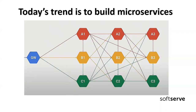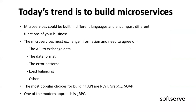These microservices need to agree on many things about how to communicate with each other. Microservices could be built in different languages and encompass different business functions, and they need to agree on a lot of things.